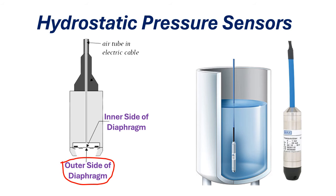This transmitter has a pressure diaphragm. The outer side of this diaphragm is in contact with liquid, while the inner side is vented to atmospheric pressure. The pressure is proportional to the height of the liquid above the sensor. Hydrostatic pressure transmitters are used in industrial plants, reservoirs, and open channels.